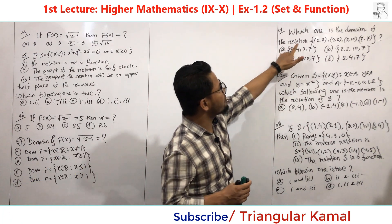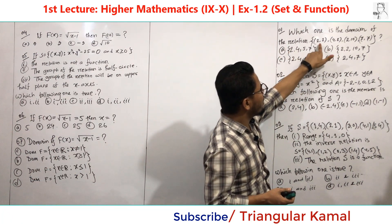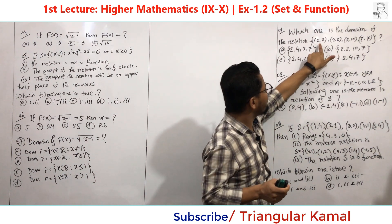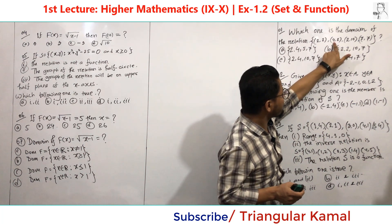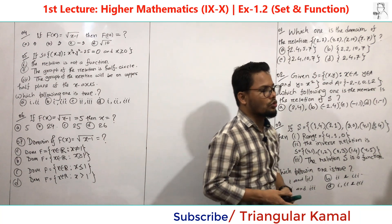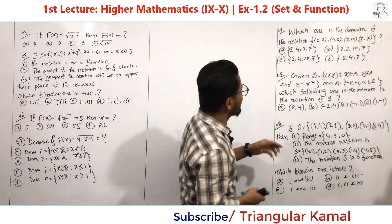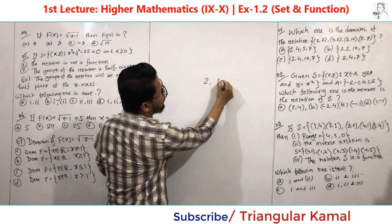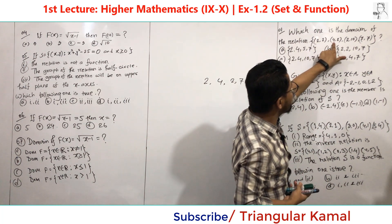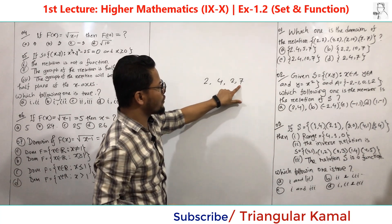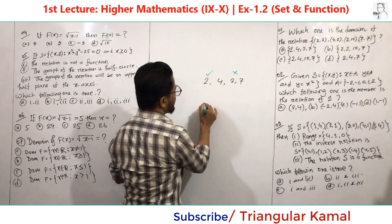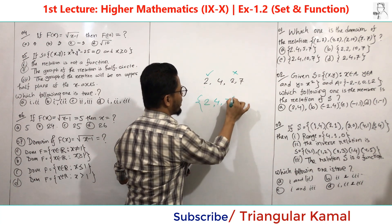The first question: which one is the domain of the relation? A relation is the cross multiplication of two different sets, and each element in the relation is an ordered pair. The first ordered pair is (2,2), second is (4,2), third is (2,10), and fourth is (7,7). The domain is the combination of first elements, so here the first elements are 2, 4, 2, and 7. Since 2 is repeated, we take it only once, giving us the domain: {2, 4, 7}.